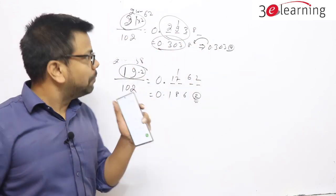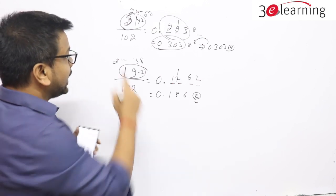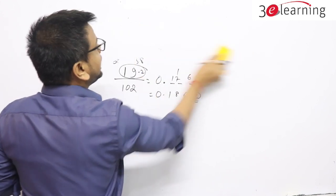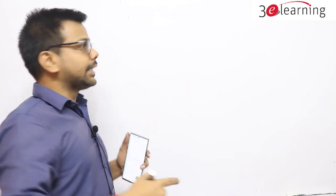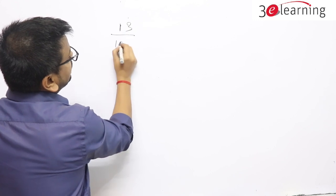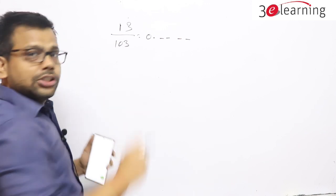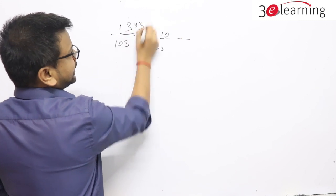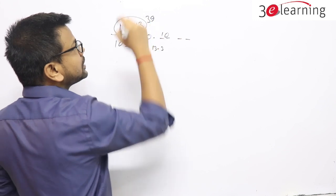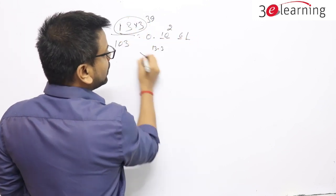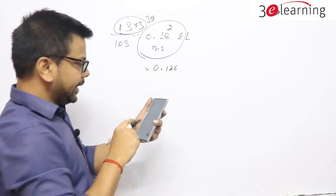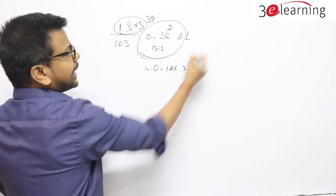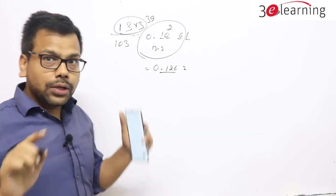Up to 3 digits you can calculate very accurately with 102. In 102 you subtract 2, multiply by 2, and check the difference from 200. Now the same for 103: 13 divided by 103 — what will you do? Subtract 3, subtract 3, multiply by 3, and check the difference from 300. The difference from 300 gives 261. So up to 3 digits this will give you the correct answer: 13 divided by 103 is 0.126.